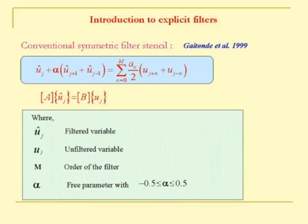We need to fix the filtering parameters, one of which is alpha on the left-hand side, and the right-hand side coefficients. We take points in a pairwise manner with a plus sign, which smoothens the solution and adds even derivatives. The number of such pairs determines the order of the filter n. The parameter alpha must lie between minus 0.5 and plus 0.5, which comes from the diagonal dominance of the A matrix: the diagonal is 1 and the off-diagonal is alpha, so 2 alpha plus 1 must be positive.